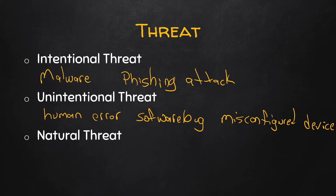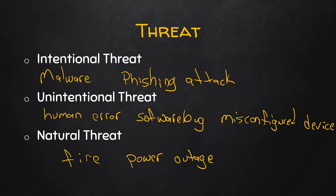The third type of threat is natural threats, which are generally things like natural disasters. This could be something like a fire, a power outage, a storm, or a flood. These are all things we don't necessarily have control over, but they could negatively impact our assets, so they're definitely still a threat.